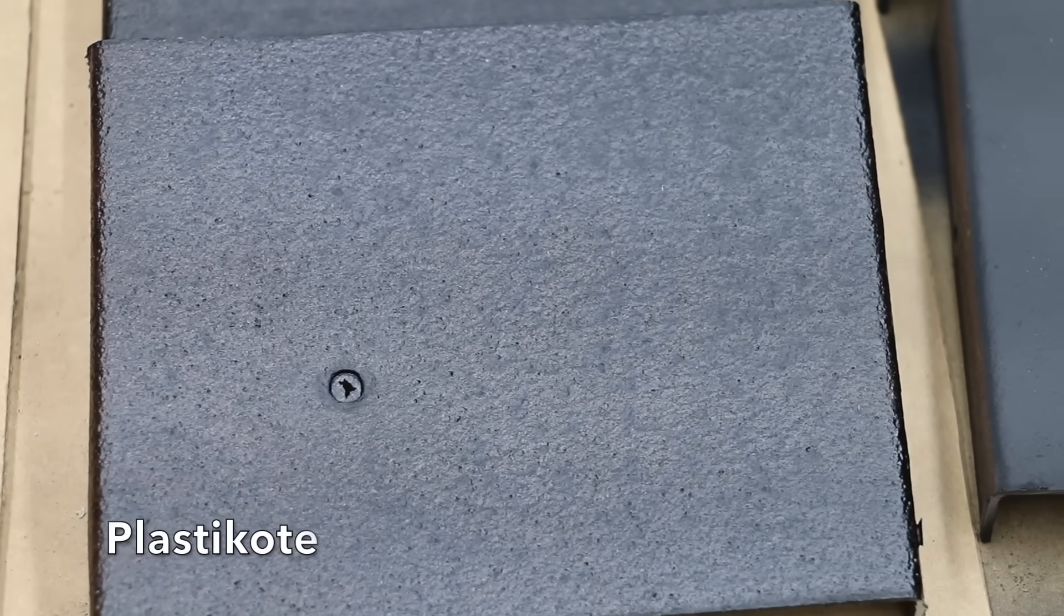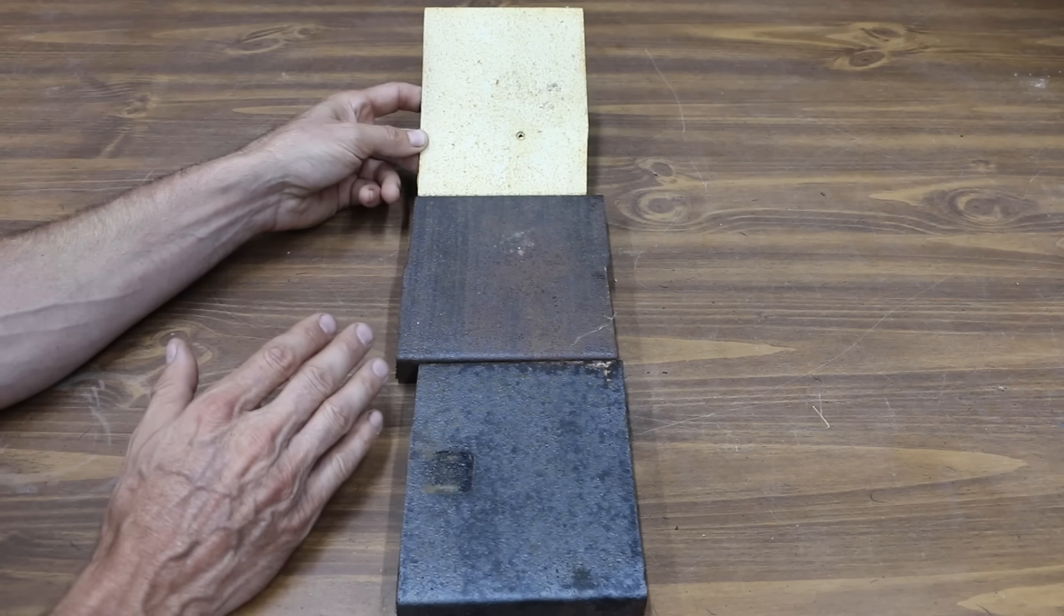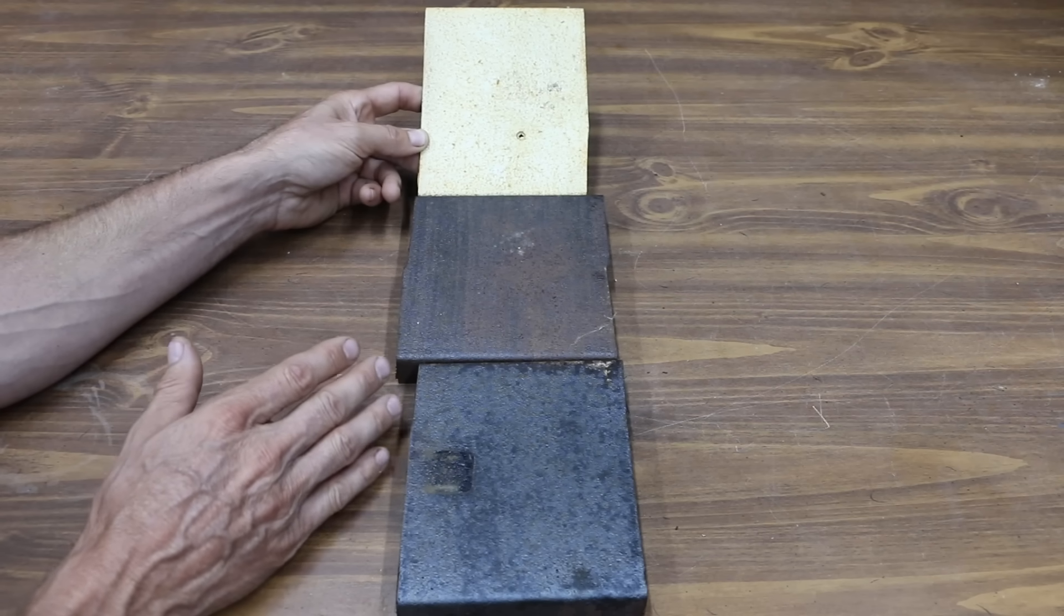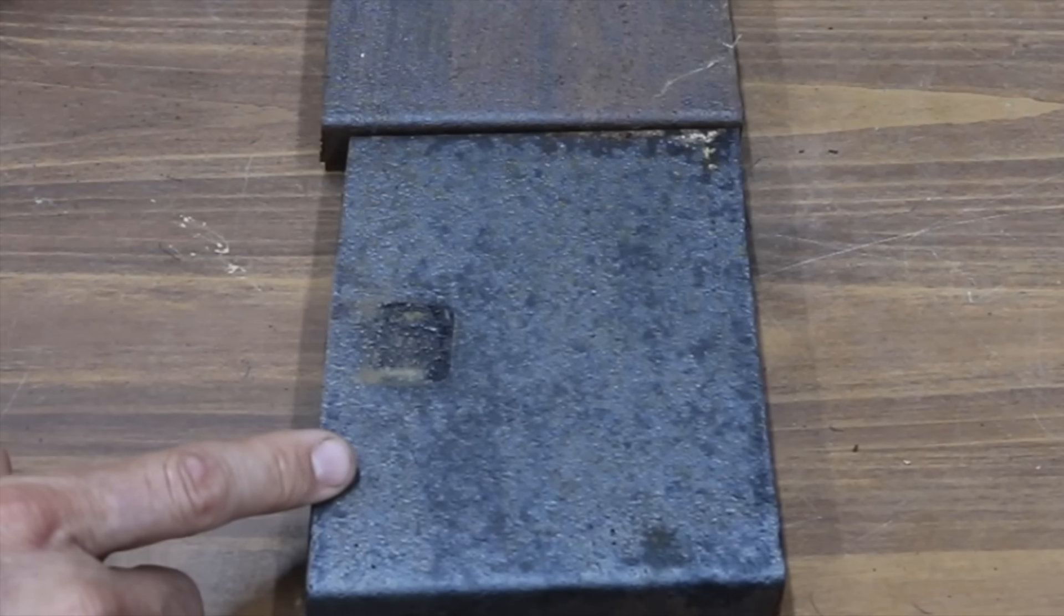The appearance of the plastic coat looks very similar to the Gemplers. Barely finishing ahead of the Gemplers is the plastic coat. Unfortunately, the plastic coat also experienced quite a bit of rust, especially on the top two panels. The panel that was not exposed to hydrogen peroxide, vinegar, and salt still has some rust.